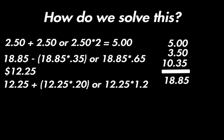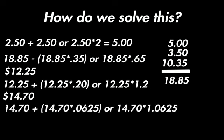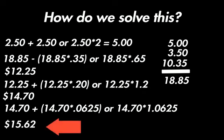So now that we know what the tip and the total prices added together, let's find the tax. We would just repeat the process again. $14.70 plus $14.70 multiplied by 0.0625 or $14.70 multiplied by 1.0625. And that will give us $15.62 which is the total for the whole meal from Mr. Bob.